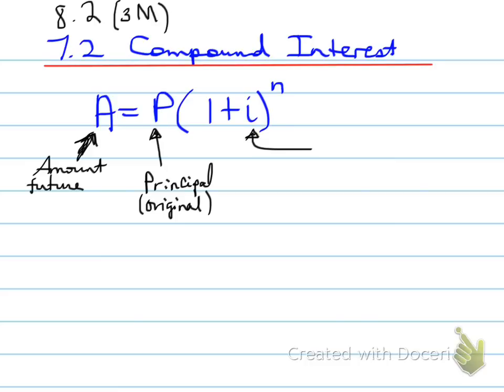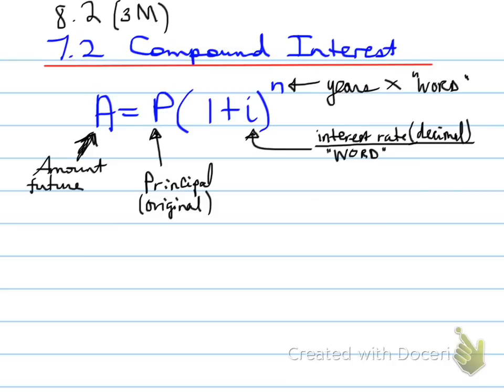i is now, be careful here, it is known as the interest rate, so the small i, as a decimal divided by this special word. We're going to learn what the word is, the word. What is that word? We'll find out. n is known as the years times, oh again, the word. Notice that there are capital letters and lowercase letters. All the lowercase letters have to do with the word.